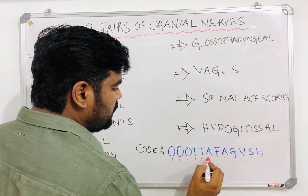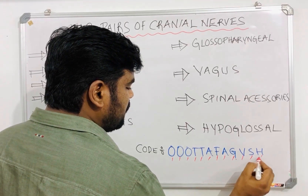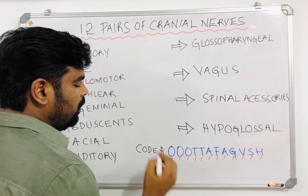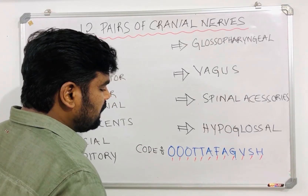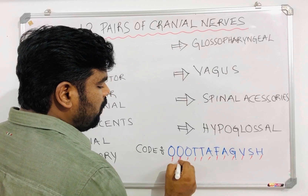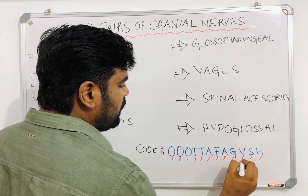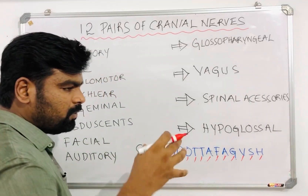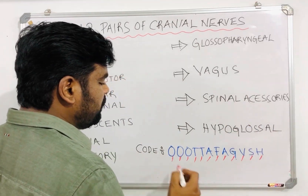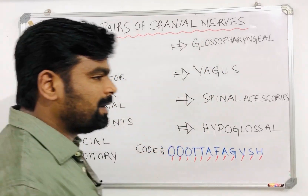...trochlear, trigeminal, abducens, facial, auditory, glossopharyngeal, vagus, spinal accessory, hypoglossal. Another mnemonic: 'One of our Tamil teacher asked for a good vada sambhar halwa.' Take the first letters of each word to remember the cranial nerves.